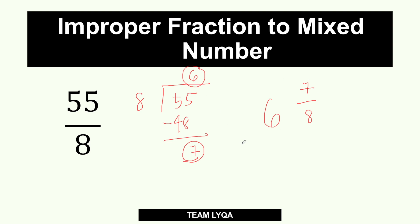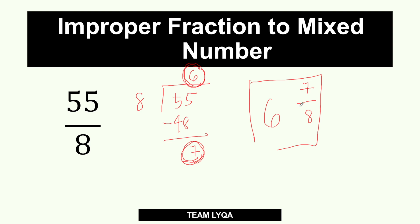Even if you do the full long division, the equivalent is the same. So to summarize: divide the numerator by the denominator. The quotient is the whole number, the remainder goes on top of the fraction, and you copy the denominator. If the fraction can be reduced to lowest terms, do that too. The answer for 55 over 8 converted to a mixed number is 6 and 7 over 8.